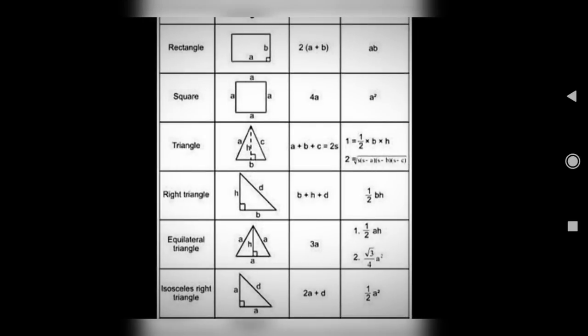From this in the last class you learned perimeter and area. Just we see what is the perimeter of rectangle. Perimeter of rectangle is 2 into A plus B and area is AB or A into B.